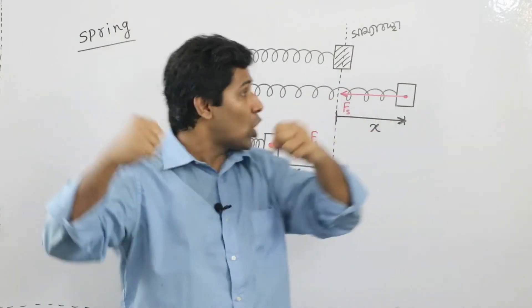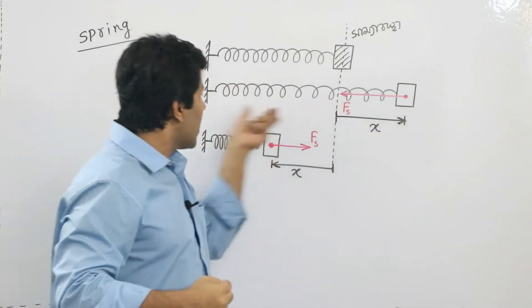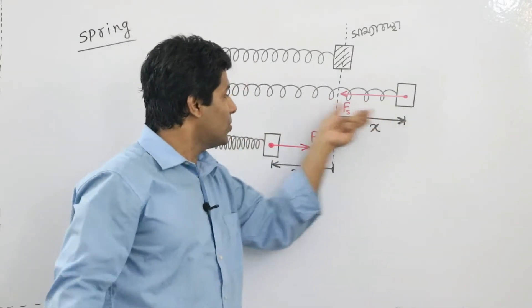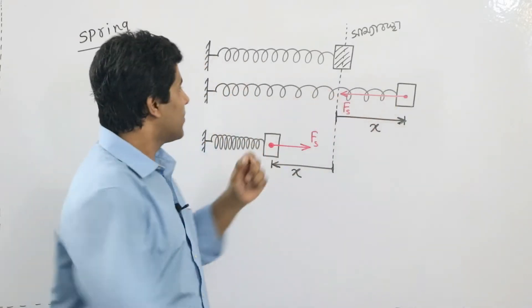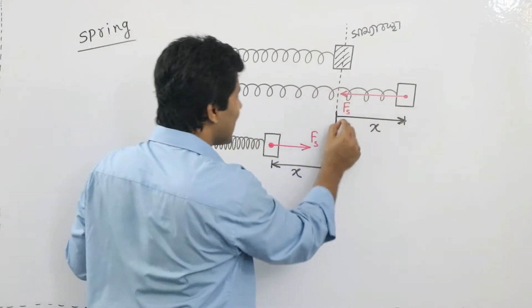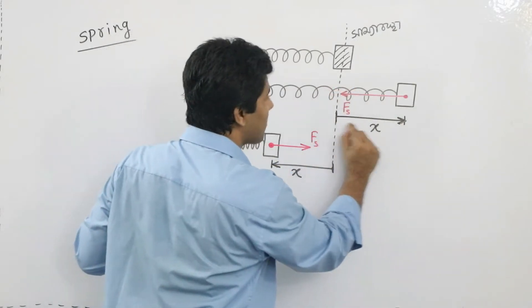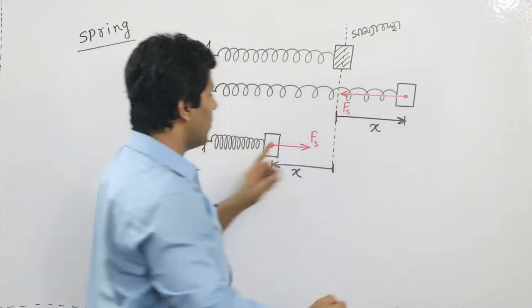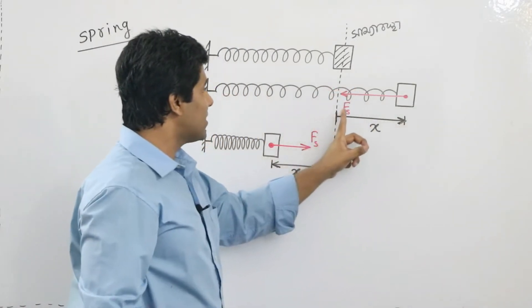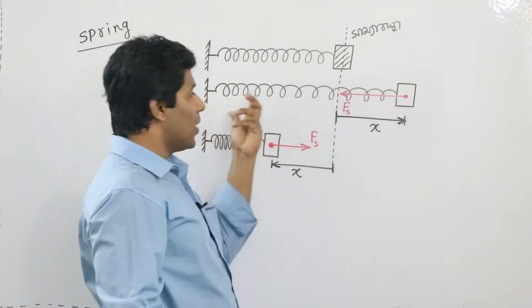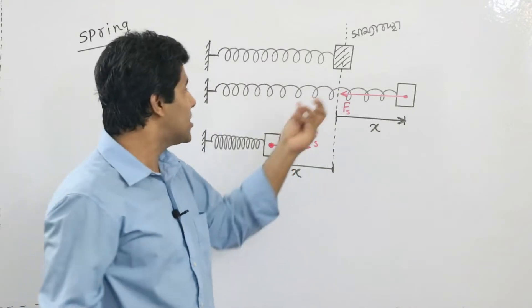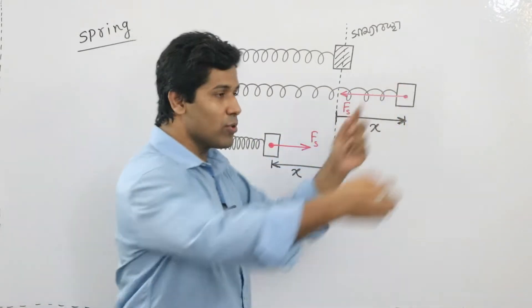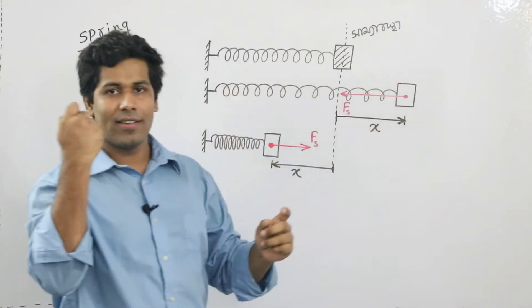Now, you have to see this form. If you look at the spring, you can see the spring in the same direction — the spring will be extended or compressed.